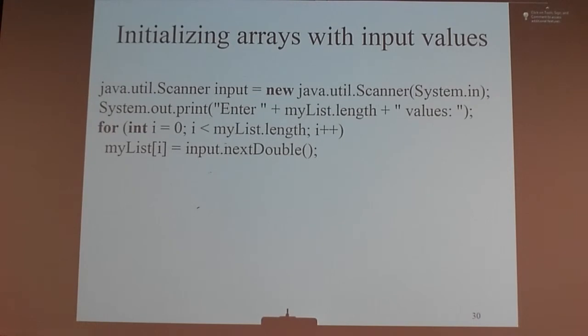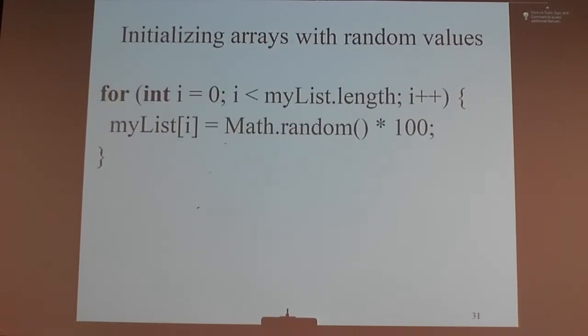So this will initialize an array with, I'm sorry. If my size of the array is 10, again, this will initialize the array with random values between 1 and 100. So I'm saying math dot random times 100.